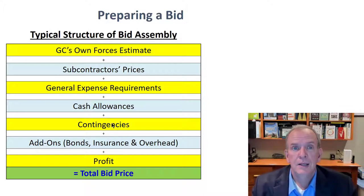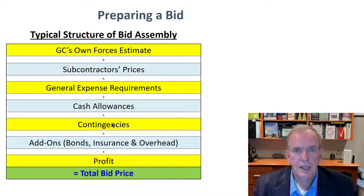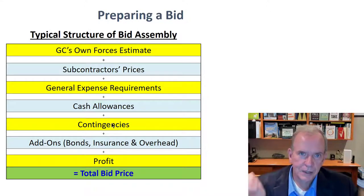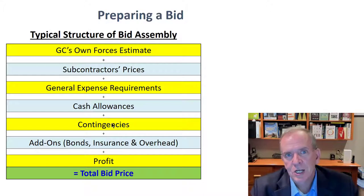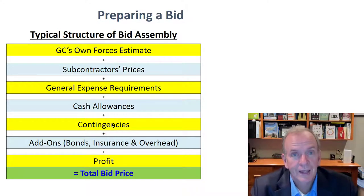Why would somebody be at three million or 2.9? They priced it high — it wasn't their thing, or they were pricing something else that day and thought they'd throw in a bid in case other people didn't price it. Maybe just maybe they'd get lucky. That can be a win for you.